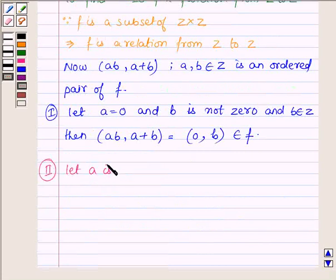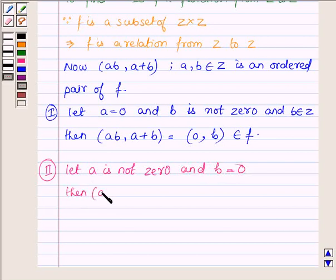Now let a is not 0, b is an element of Z, and b equals 0. Then the ordered pair (ab, a+b) will become (0, a) which belongs to f. This shows that the element 0 which is the first element has two different images a and b.